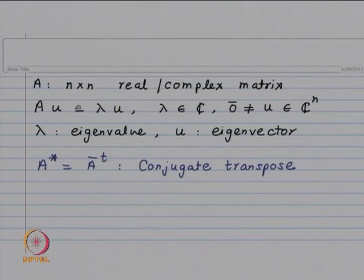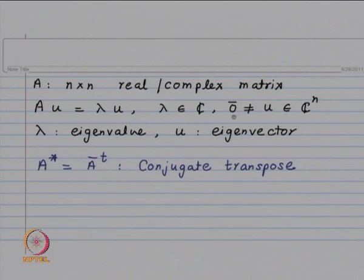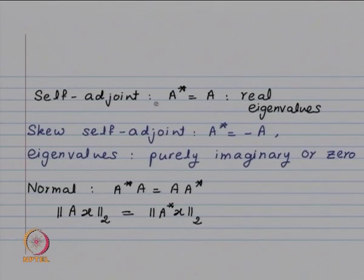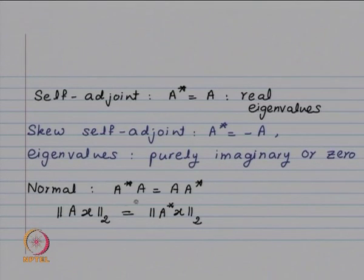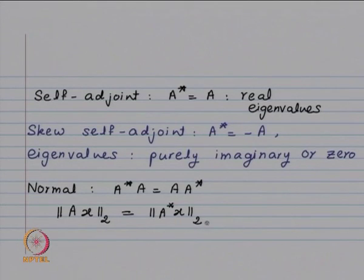Our notation: A is n-by-n, either real or complex; Au = lambda u, where lambda is a complex number and u is a non-zero vector in C^n. A* equals A-bar transpose, the conjugate transpose. Self-adjoint means A* = A — these have real eigenvalues. Skew self-adjoint means A* = -A — eigenvalues are either purely imaginary or zero. For a normal matrix, A*A = AA*, and one can show that the 2-norm of Ax equals the 2-norm of A*x.